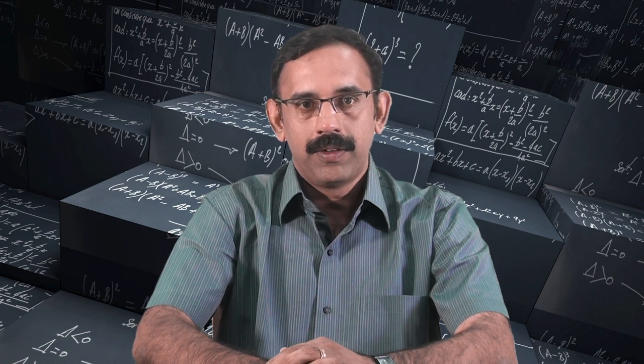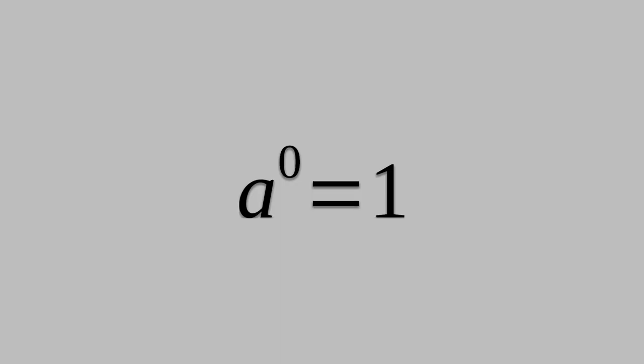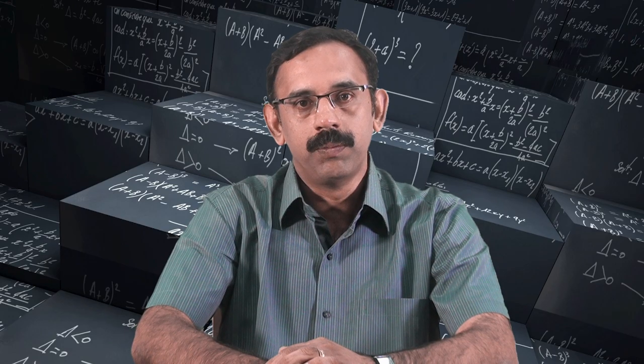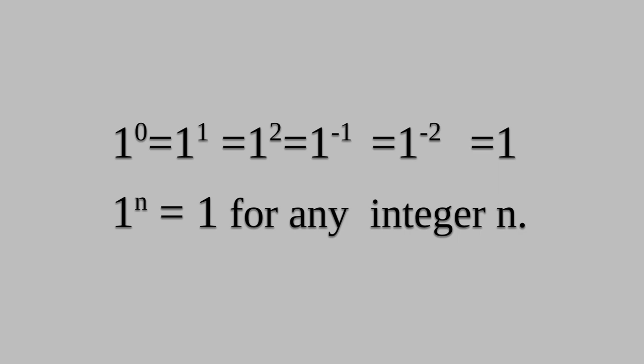About exponents, we already know that a raised to 0 equals 1 from the previous class. One can observe that 1 raised to 0, 1 raised to 1, 1 square, 1 raised to minus 1, and 1 raised to minus 2 are all equal to 1. Hence, we can say that 1 raised to n is equal to 1 for any integer n.